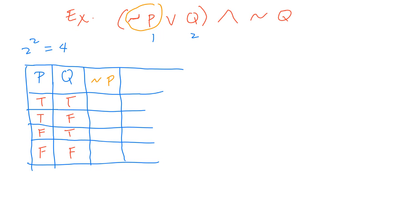When you see not p, you look at the p column and take the opposite. If you have T in the first row it gives you F; the second row is F so its opposite is T; the third row is F so its opposite is T; the last row is also F so the opposite is T.